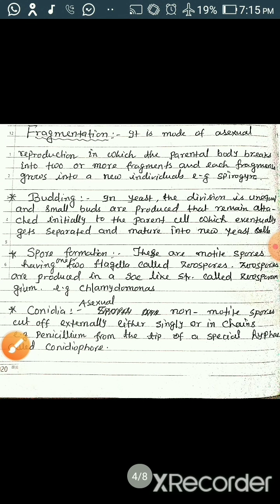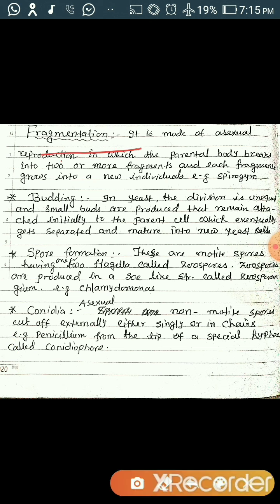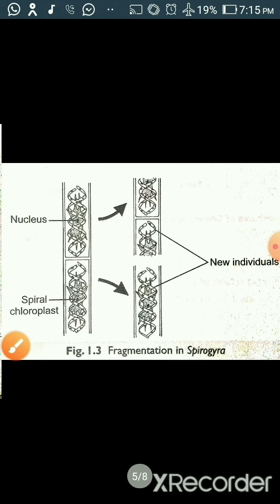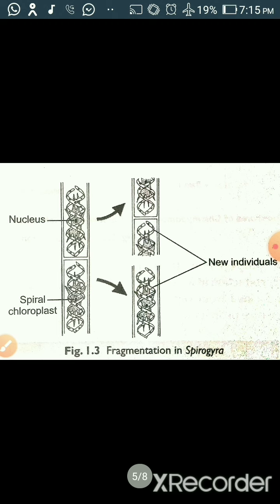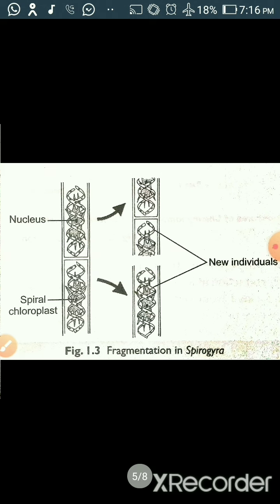Now we will see fragmentation. It is a mode of asexual reproduction in which the parental body breaks into two or more fragments and each fragment grows into a new individual. An example is spirogyra. In the diagram, you can see the parent cells — after maturity, each breaks into fragments, and these fragments have the potentiality to develop into new individuals like the parent cells.